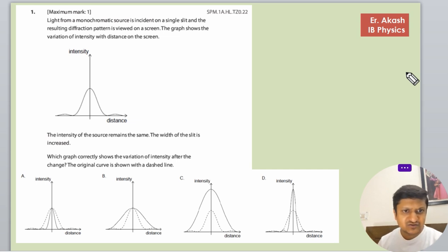The intensity of the source remains the same, it means that the lambda is same. The width of the slit is increased. Okay. Which graph correctly shows the variation of intensity after the change? The original curve is shown with dashed line.